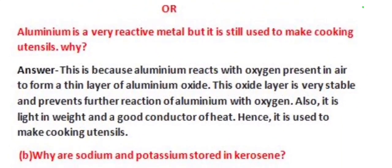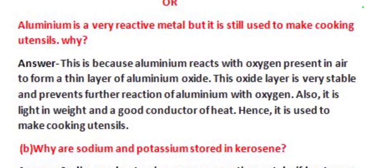Our next question is: aluminium is a very reactive metal, but it is still used to make cooking utensils. Why? This is because aluminium reacts with oxygen present in air to form a thin layer of aluminium oxide. This oxide layer is very stable and prevents further reaction of aluminium with oxygen. Also, it is light in weight and a good conductor of heat. Hence, it is used to make cooking utensils.